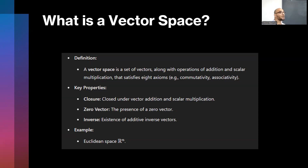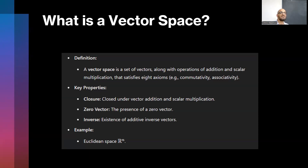First, we talk about closure. Vector spaces are closed under vector addition and scalar multiplication. It means that if you have two vectors and you add them together, the resulting vector — for example, you have vector A, you have vector B, you add them together — the resulting vector is also in that vector space.